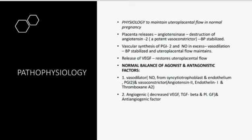The vasodilators include nitric oxide from syncytiotrophoblast and endothelium, and PGI2 or prostacyclin. The vasoconstrictors — angiotensin II, endothelin-1, and thromboxane A2 — are normally decreased. Angiogenic factors such as VEGF (vascular endothelial growth factor), TGF-beta, and placental growth factor are also decreased in synthesis in preeclampsia.